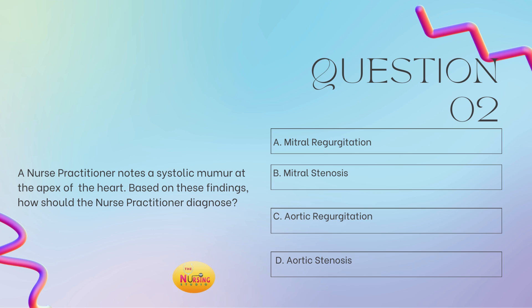And if y'all struggle with murmurs, go check out my murmur video — I'll link it in the description to help you. But if you're searching for it, just go to my playlist because I have so many videos grouped together. Under the playlist, there is a section for anemia and murmurs, which has the murmur video as well as murmur practice questions as well as SOAP note examples for that. So your answer is A, mitral regurgitation.